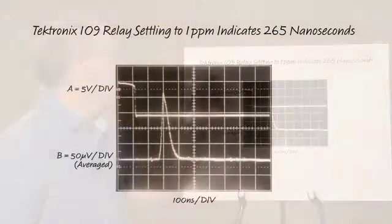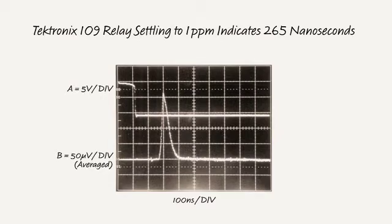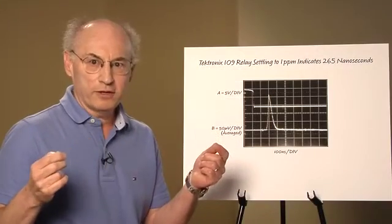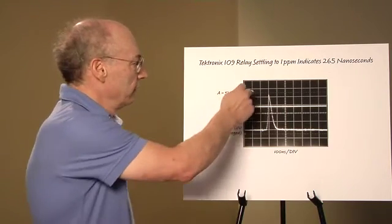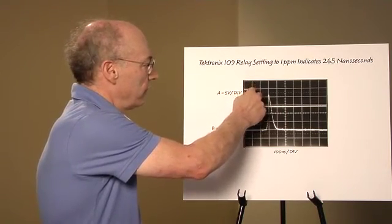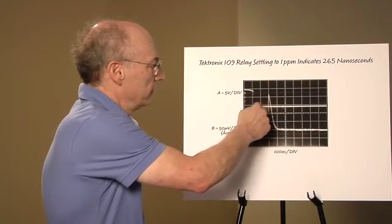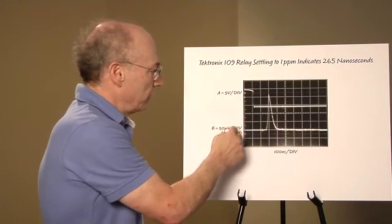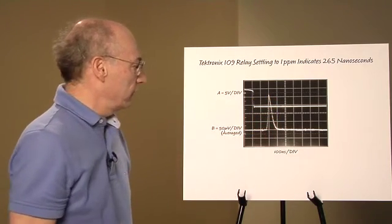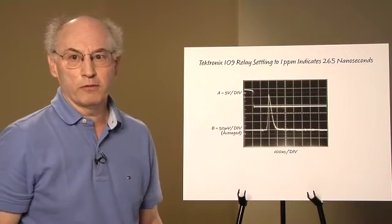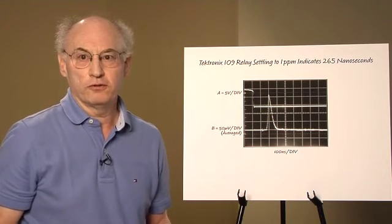However, the Tektronix 109 relay has had very special attention paid to its DC through wideband characteristics. And enables you to put in a signal to the DAC settling test fixture that approximates an ideally quick settling DAC. This is the contacts opening and settling macro scale. And on a micro scale you can see about 260 nanoseconds to settle the last couple hundred microvolts, which stands this test fixture in good stead.